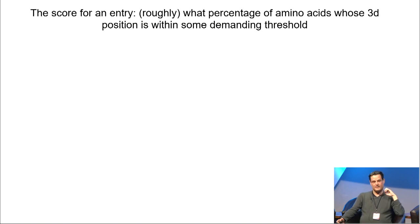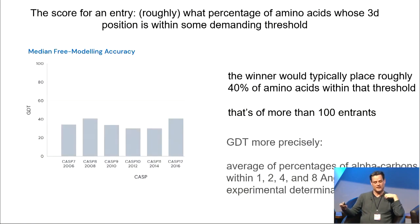Roughly speaking, the right way to think about the scores I'm about to say, they're from 0 to 100, is what percentage of amino acids, whose 3D position is within some very demanding threshold. So I'll just show you the CASP results from 2006 to 2016. This was the winner in the hardest category, the proteins that I thought would be most difficult, the median free modelling accuracy. And the winner would typically place roughly 40% of amino acids within that very demanding threshold. There's typically more than 100 entrants, so this is a lot of groups, an enormous amount of computing power.